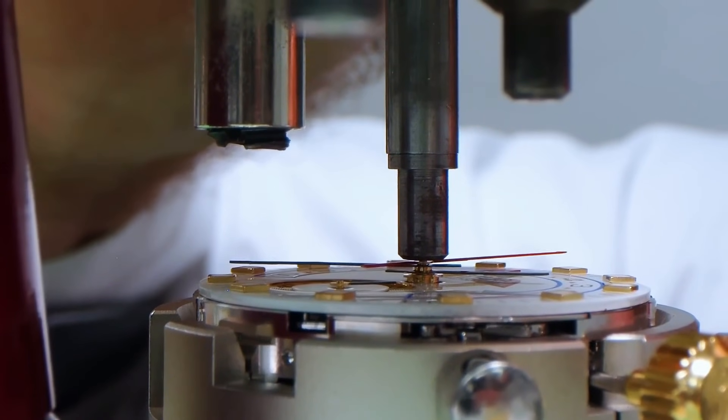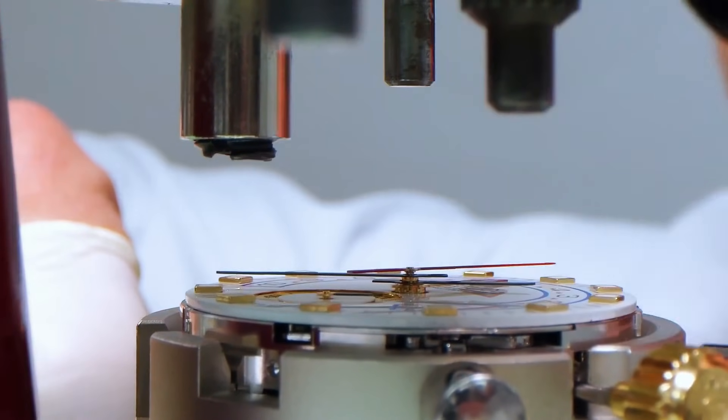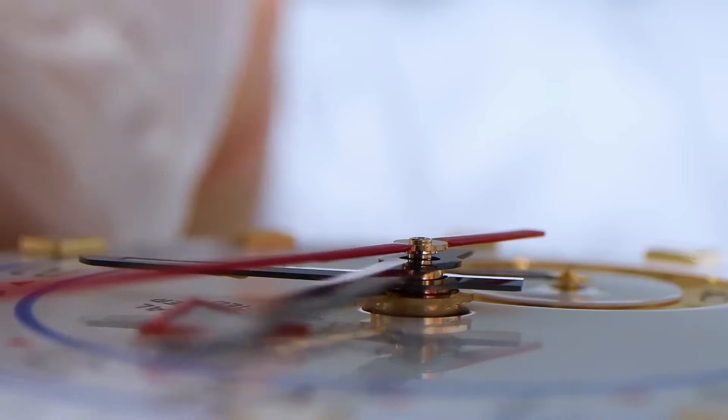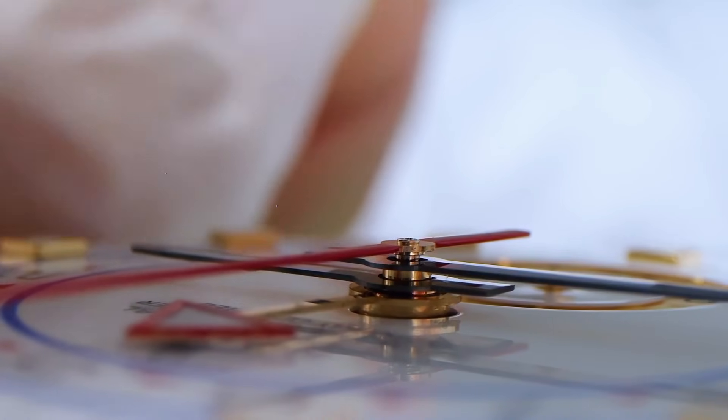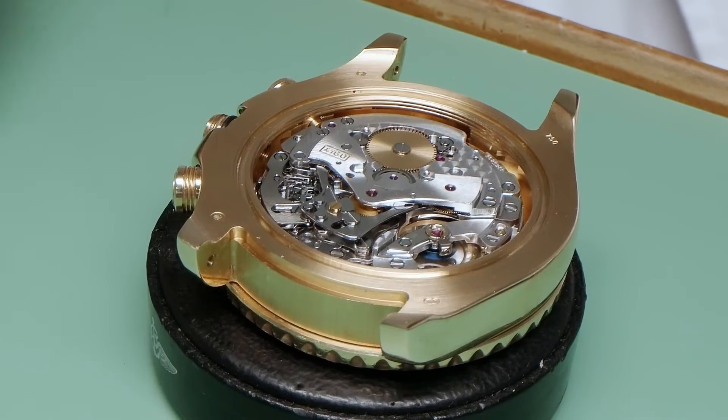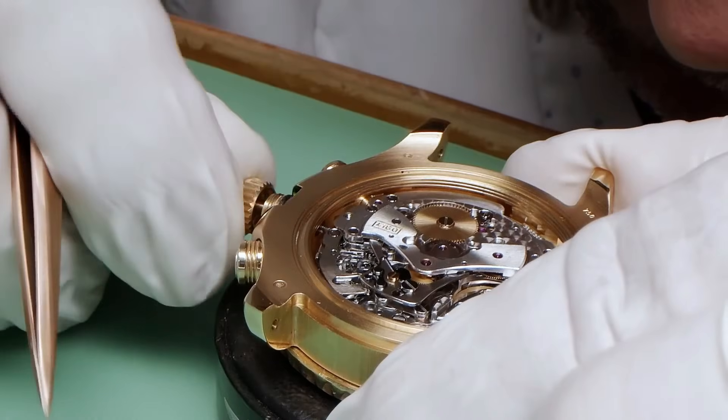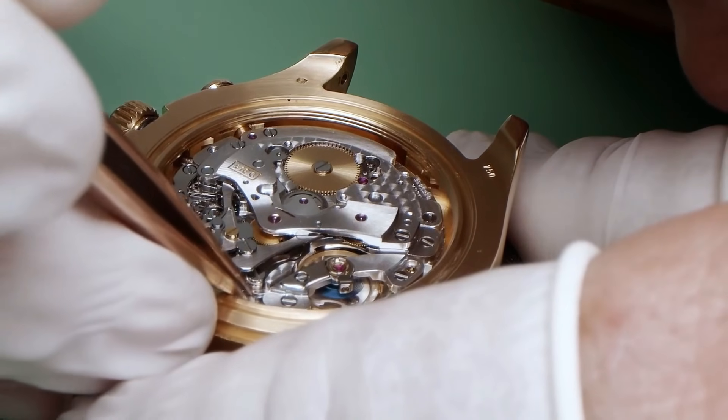To make sure every dial is perfect, Rolex puts them through tough tests. They even drop the dials to check if the hour markers will stay put during everyday wear. Every part has to pass strict quality checks before moving on. With the dial finished, we're getting closer to seeing the whole watch come together. The final assembly is coming up next, and it's sure to show off Rolex's dedication to making the best watches possible.